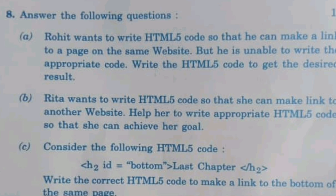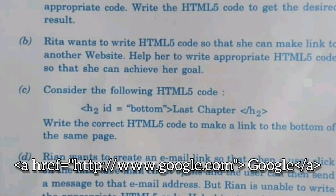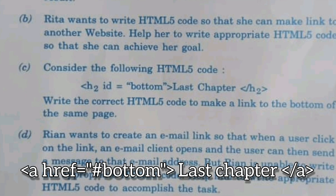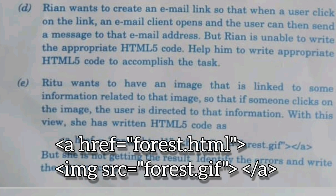A local link goes to another page within the same website. An external link uses href with a full URL such as http://www.google.com. An anchor link uses href with a hashtag, for example href='#bottom', to jump to a section within the page. A mailto link uses href='mailto:abc.xyz@mail.com' to send an email. An image can also be used as a link using the href tag.